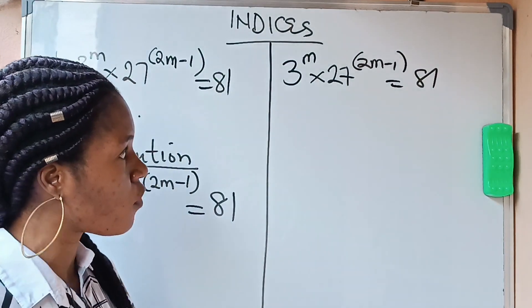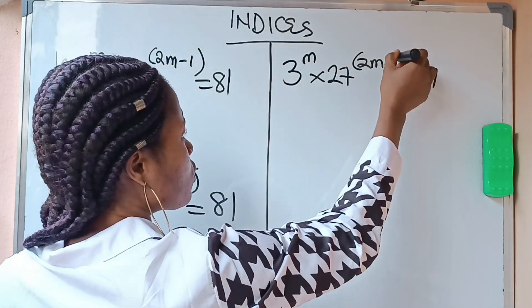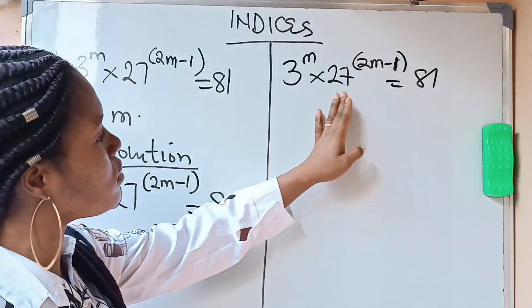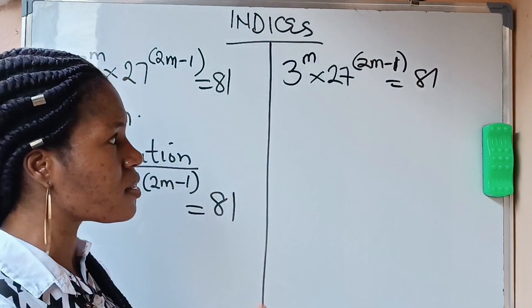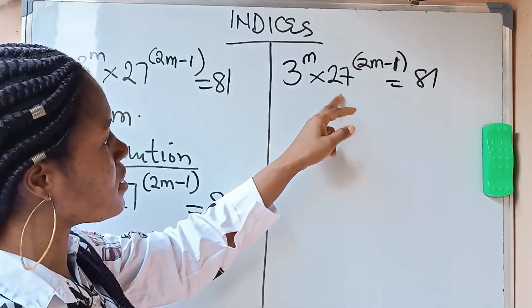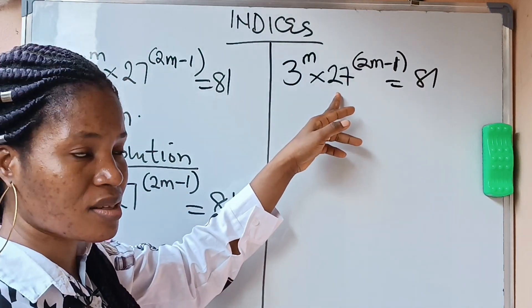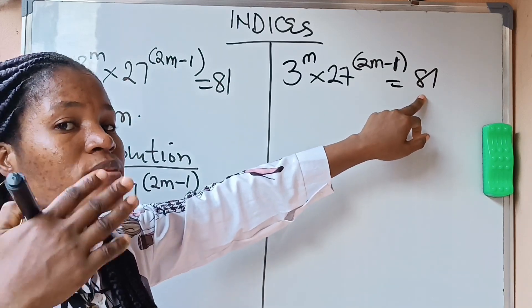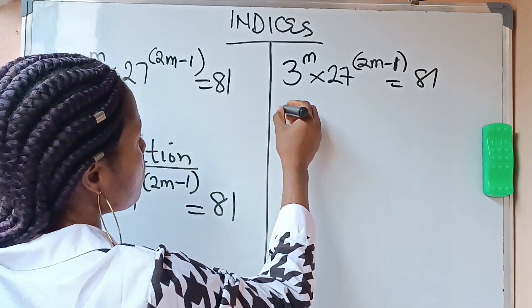First of all, when you see indices, the first thing that should come to your mind is whether you can put everything in the same base. The lowest base here is 3. Can you convert 27 to 3 raised to some power? Yes. Can you convert 81 to 3 raised to some power? Yes. Let's go ahead and do that.